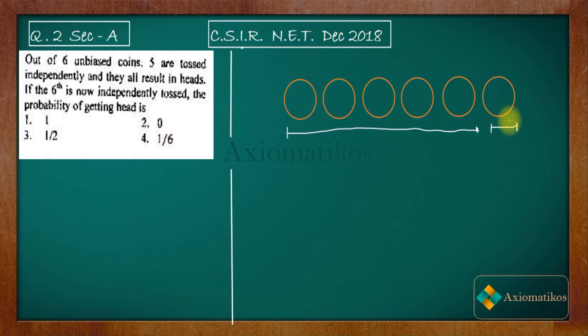So what do you think, do you need information about the five coins when you're tossing the sixth one? No, you don't need. Why? Because you are doing it independently. So the probability of getting head on the sixth coin has nothing to do with the probability of getting head on the remaining ones.